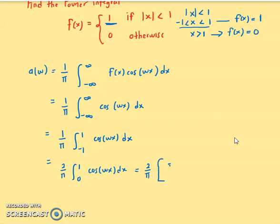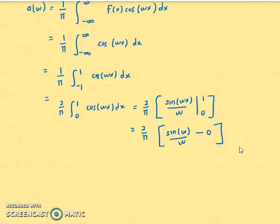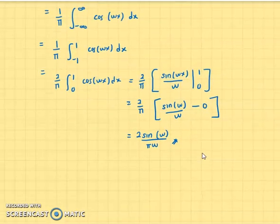Integrating cosine gives us sine: (2/π) [sin(ωx)/ω] from 0 to 1, which results in a(ω) = 2 sin(ω) / (π ω).